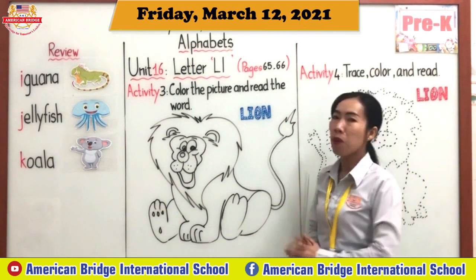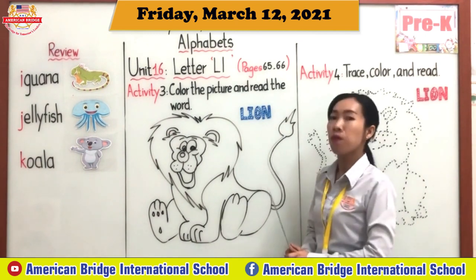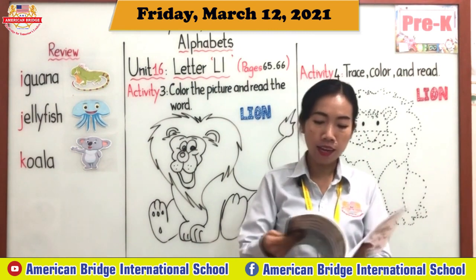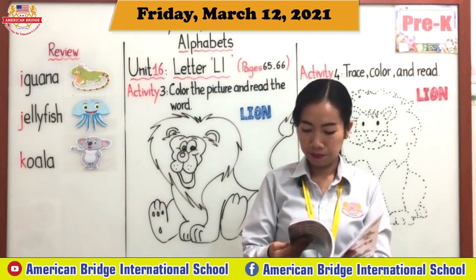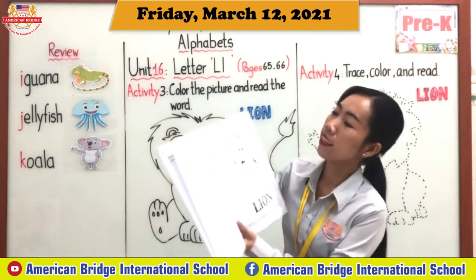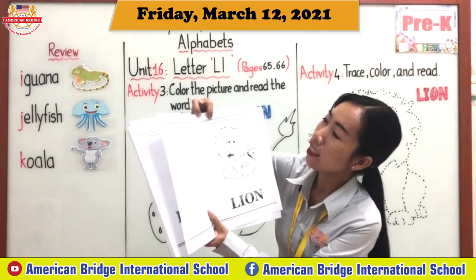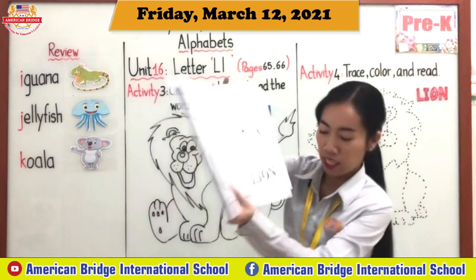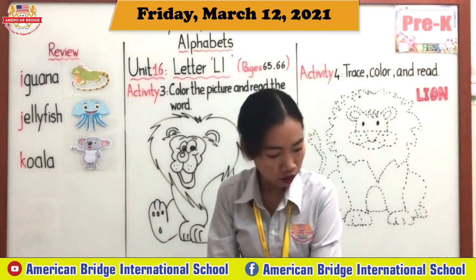Please open your book on page 65. Okay, open on page 65. Together — is here, 65. You see Activity 3: color the picture and read the word — lion. Okay, you want to see the lion.